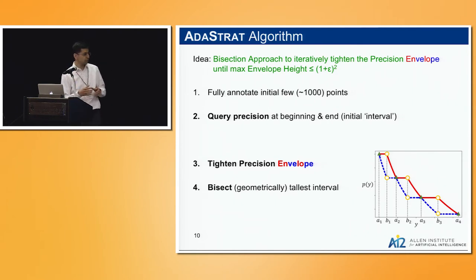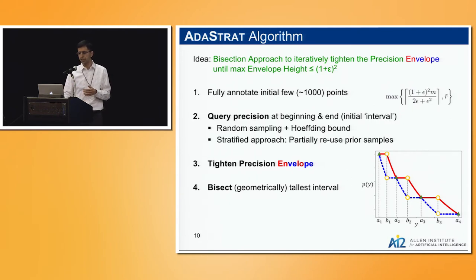How do we use that to come up with a bound? It's straightforward. We start with computing this precision at the very beginning, at the very end. That gives us one interval, and then we start bisecting it until the height of the envelope drops below the desired approximation ratio. We start by fully annotating the initial part. How big that initial part is depends on your monotonicity parameter m and the epsilon you care about.